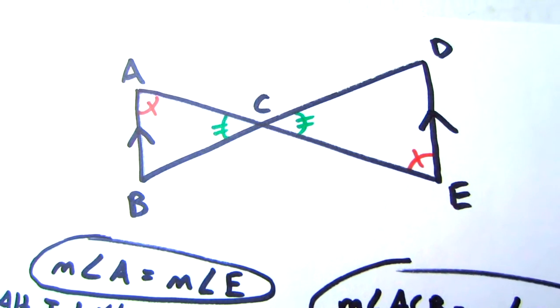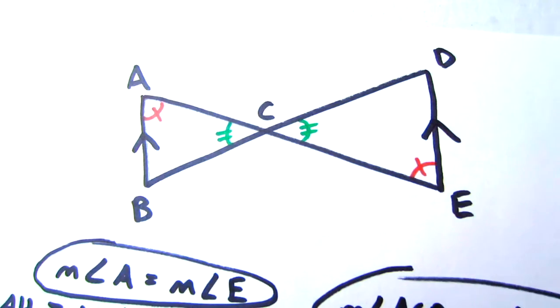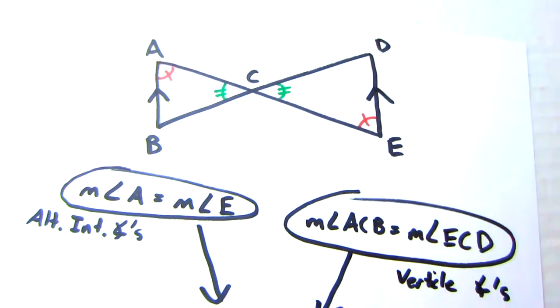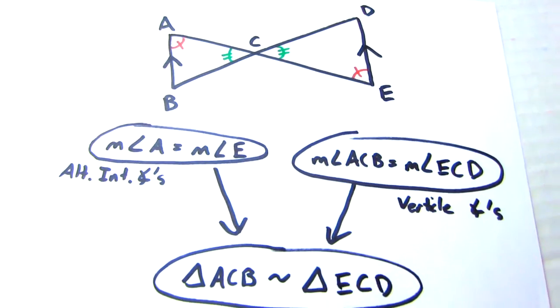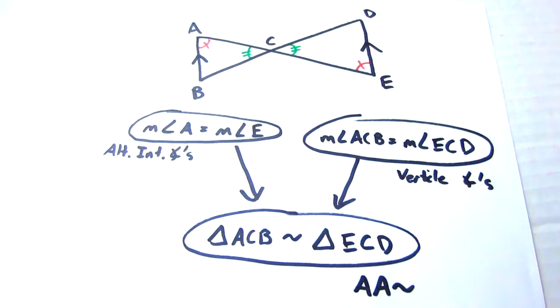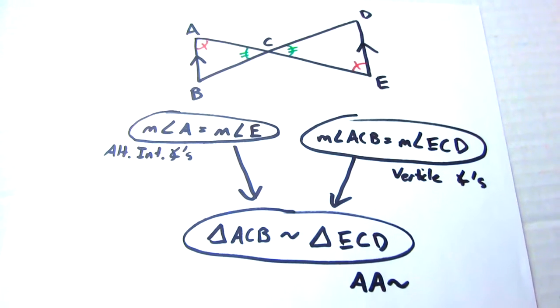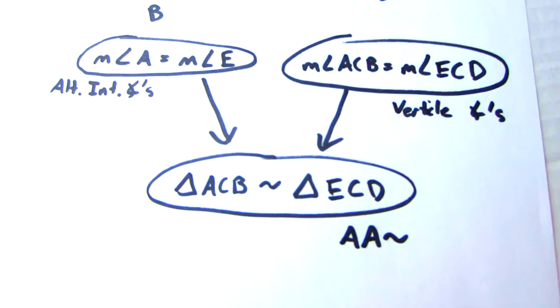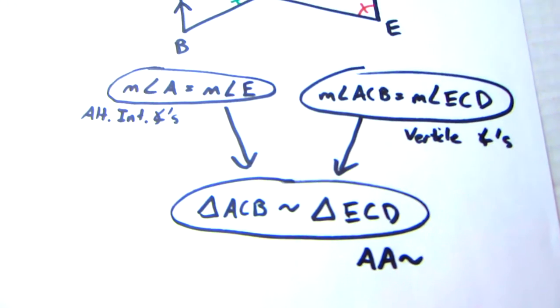For instance, as you can see, the two parallel sides gave me alternate interior angles which are equal, as well as the angles in the middle are vertical angles. Using these definitions, I can show that both angle A and angle E are the same, as well as the other two central angles. Thus giving me enough information to prove that the two triangles are similar by angle angle similarity.